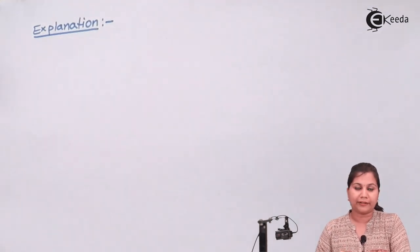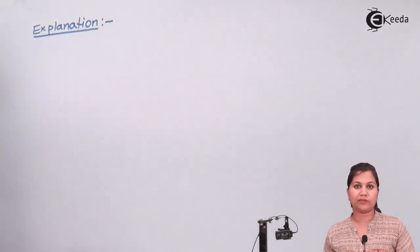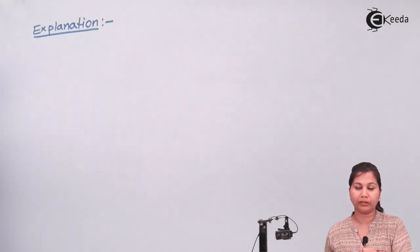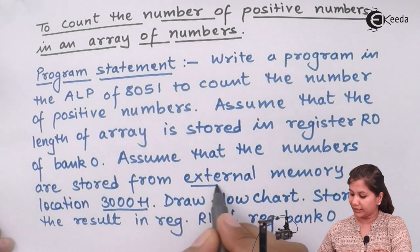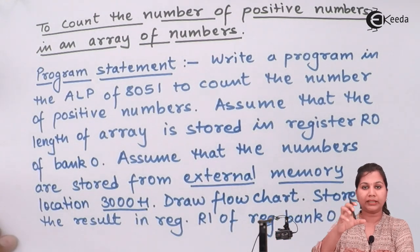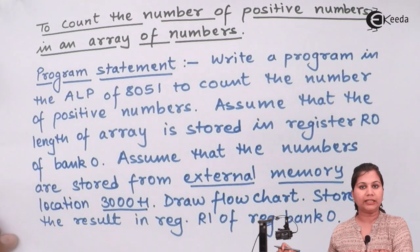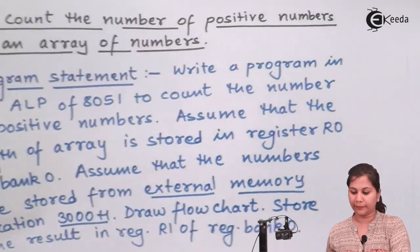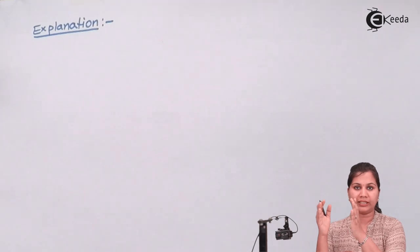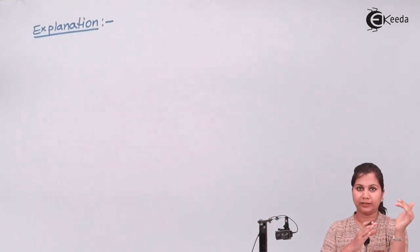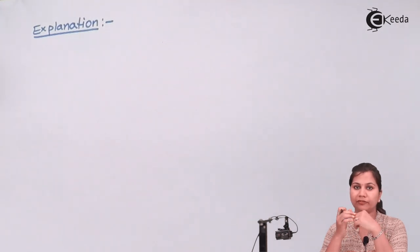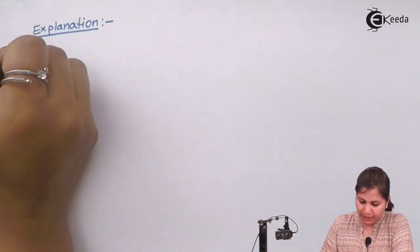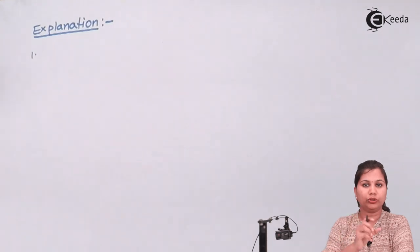To count the number of positive numbers in the array, we first need to get each number and check whether it is positive or negative. The number is stored in external memory, so we bring it into internal memory. In the 8051, the most important internal register is the accumulator, so the first step is to load that number into the accumulator.